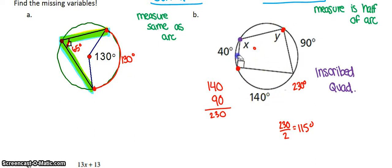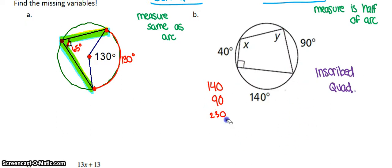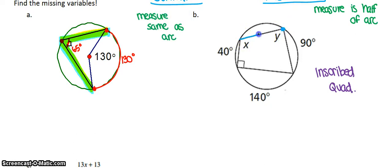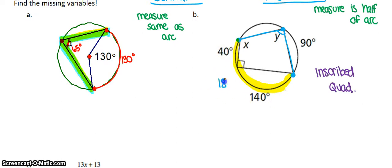Angle Y is also an inscribed angle because its vertex is on the edge of the circle. Its intercepted arc is across from it, made up of arcs measuring 40° and 140°, giving a total of 180°. So angle Y = 180 ÷ 2 = 90°.